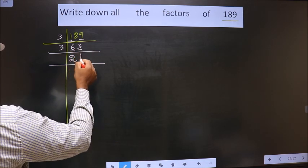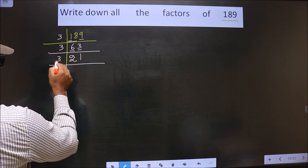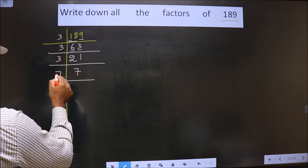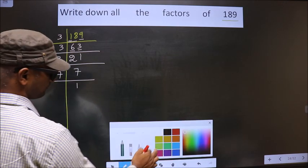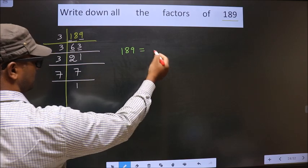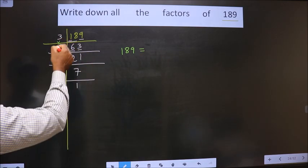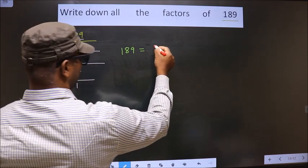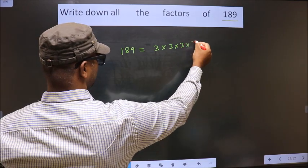Next number is 3. When do we get 3 in the 3 table? 3 once is 3. Now here we have 21, and 21 is nothing but 3 sevens. Now 7 is a prime number, so 7 once is 7. So 189 equals the product of these numbers: 3 into 3 into 3 into 7.